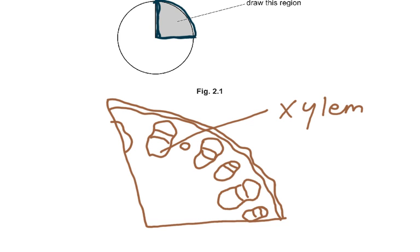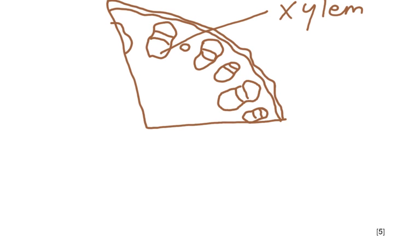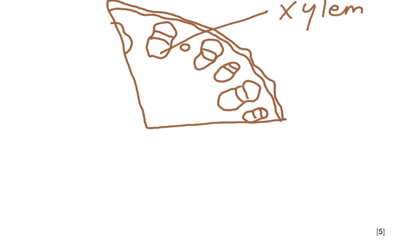This would be the plan drawing, and it is worth five marks. The five marks are: minimum size and number of tissue layers, draws a quarter of the stem with no cells, draws the minimum number of vascular bundles, vascular bundles subdivided, and a label line with label to xylem. Those are the five marks for this plan drawing.